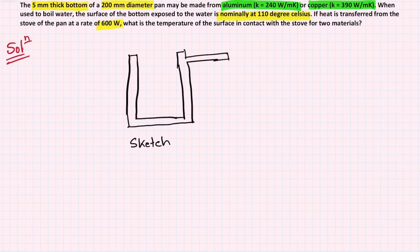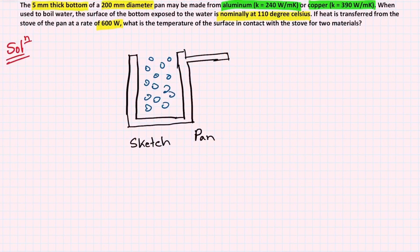The problem setup involves a rough sketch. This is the pan — the pan contains water which is boiling and warm. The pan has a bottom surface in contact with the water. The question is about the surface exposed to water and the bottom surface contact.